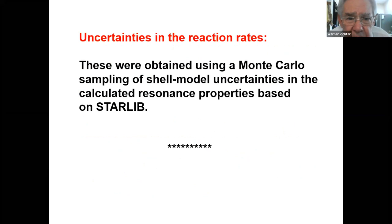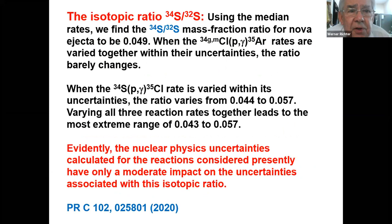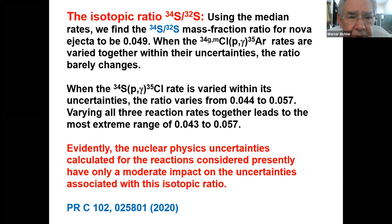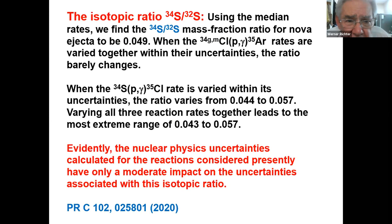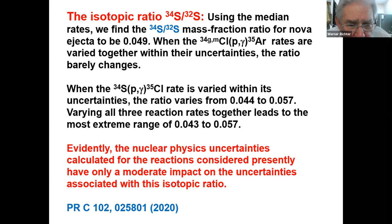Uncertainty analysis was applied to all the calculations. The isotopic ratio results showed that the general mass fraction ratio ejected was 0.049. Allowing some variation within uncertainties, the ratio changes somewhat. Varying all three reaction rates leads to a reasonably narrow range, so evidently the nuclear physics uncertainties calculated have only a moderate impact on the uncertainties associated with the isotopic ratio. There's a lot of detail in the paper which appeared quite recently summarizing everything discussed.